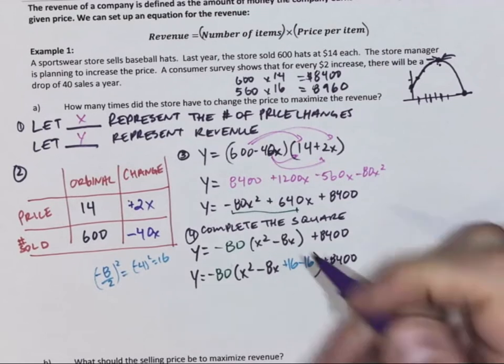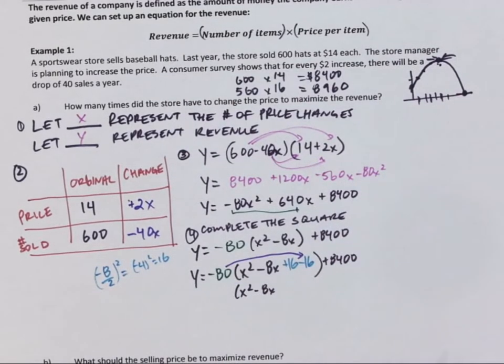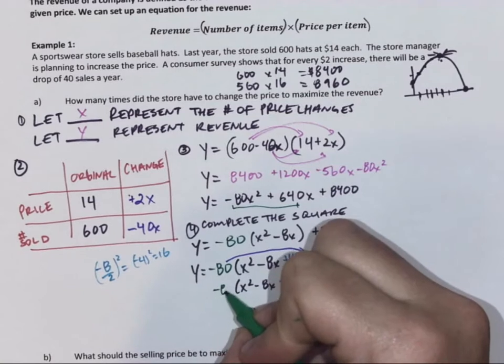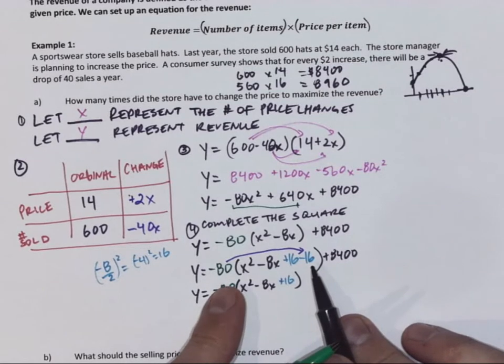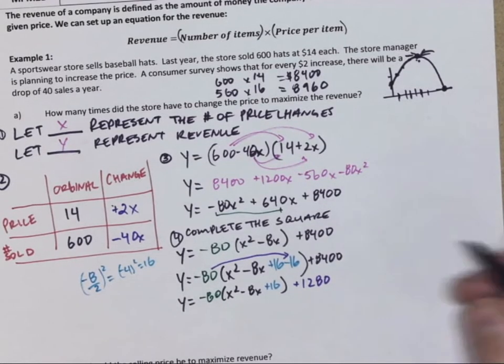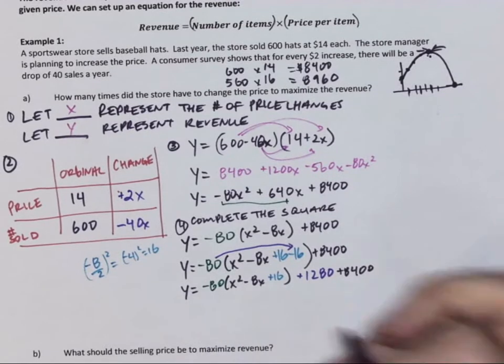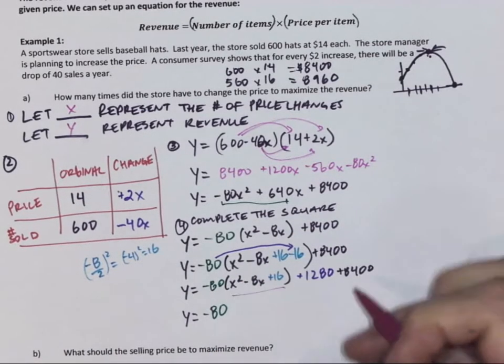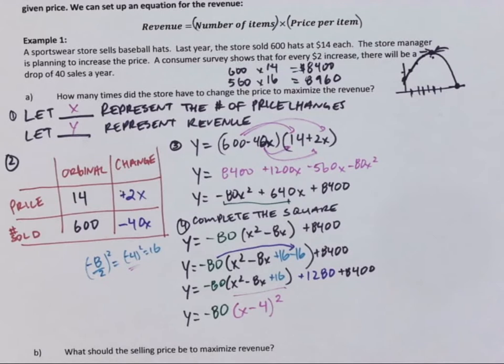I'm going to need to distribute negative eighty times negative sixteen to get it out of the brackets. Get out of the party. And negative eighty is still in front, it's part of the equation. Negative eighty times negative sixteen gives me positive twelve eighty. I still have my eight thousand four hundred. Go back, collect my like terms. Factor my perfect square trinomial. Remember that all of that becomes X minus four, the same minus four that we had there, all squared.